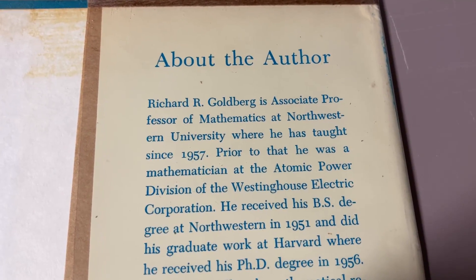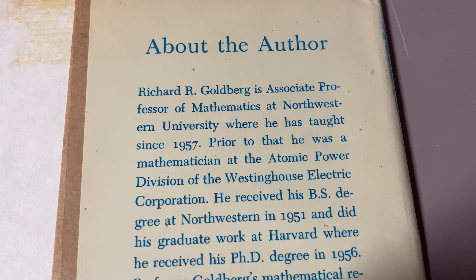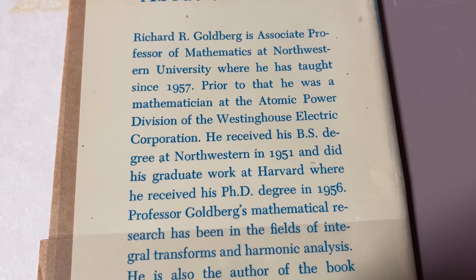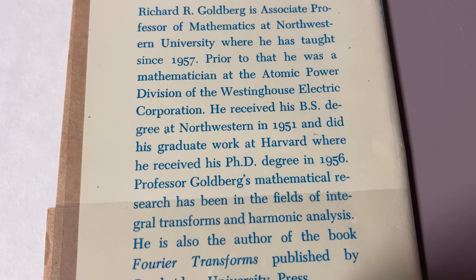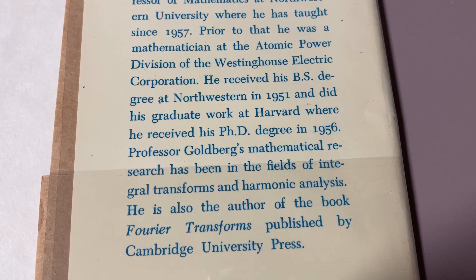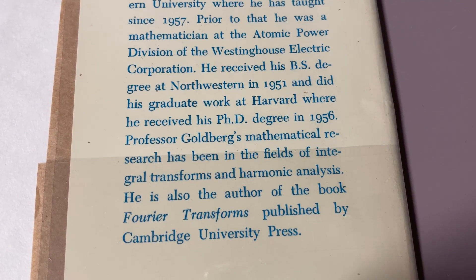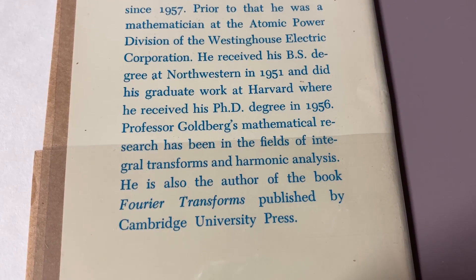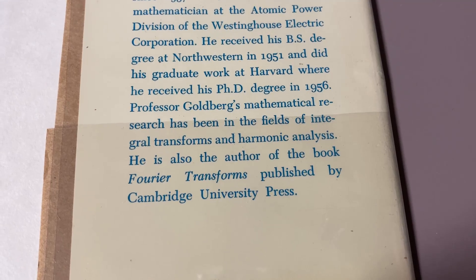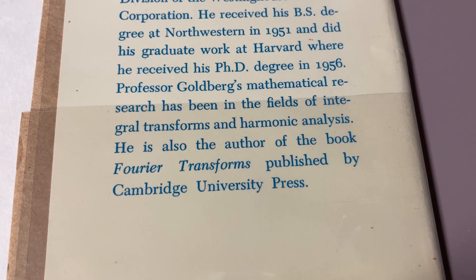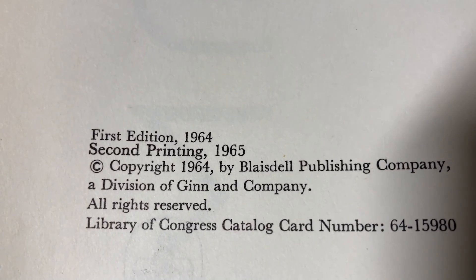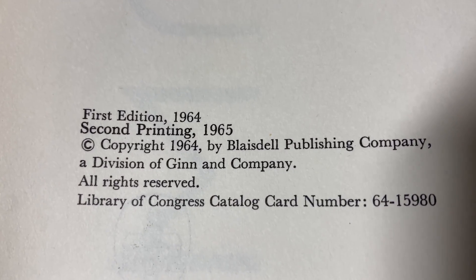Richard R. Goldberg is an associate professor of mathematics at Northwestern University, where he has taught since 1957. Prior to that, he was a mathematician at the Atomic Power Division of the Westinghouse Electric Corporation. He received his BS degree at Northwestern in 1951 and did his graduate work at Harvard, where he received his PhD degree in 1956. This particular copy of the book is the second printing, which was printed in 1965.